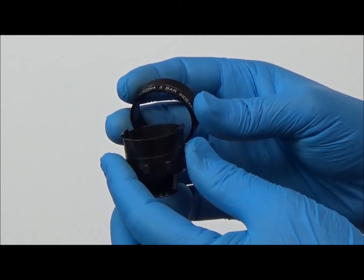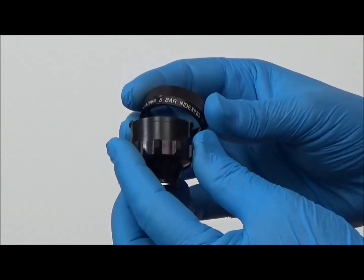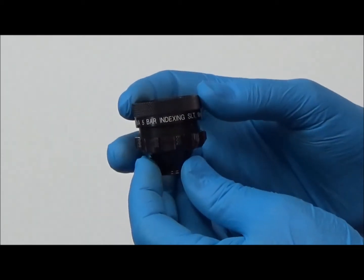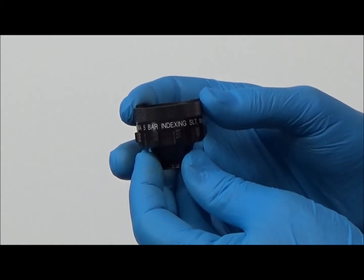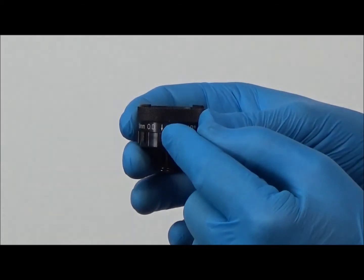To reassemble, simply slide the knurled rim over the tabs until it clicks into place. Note the direction of the arrows on the rim when reassembling. The arrows should point to the lens when reassembled.